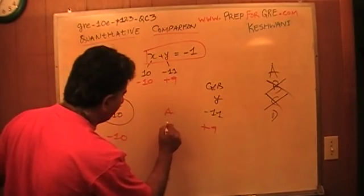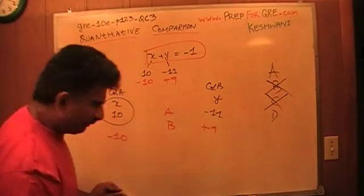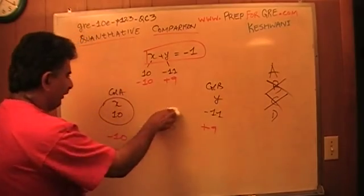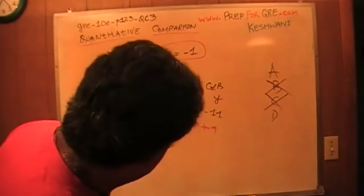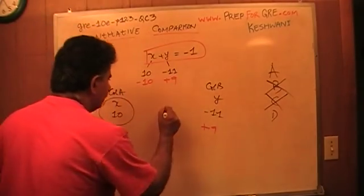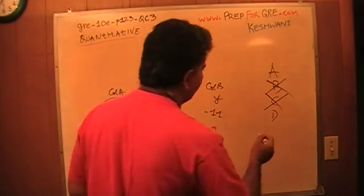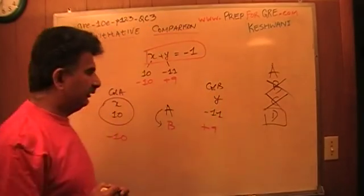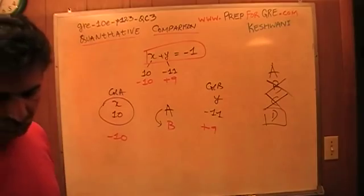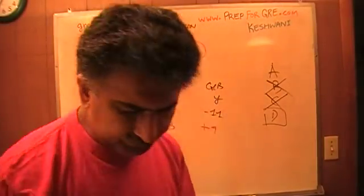Before the answer was A, now the answer is B. Let me put the before answer in the black marker so we can keep the two separate. There we go. Answer changed from A to B which tells me that the correct answer is D. You cannot really tell. It depends on the quantities of X and Y. There is not enough information here.